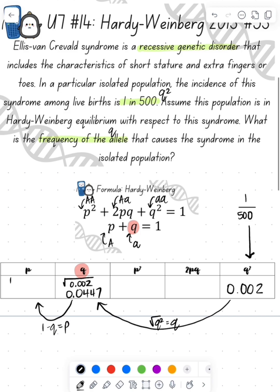Now p + q = 1, so 1 - q is going to equal p. That's going to give me 0.9553 for my p value. Now that I know p, I can square that value to get my p², which is going to be 0.913.